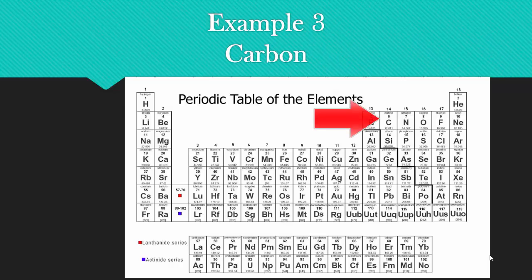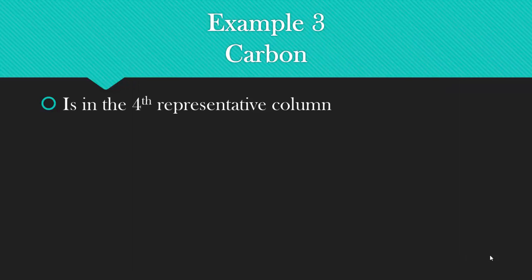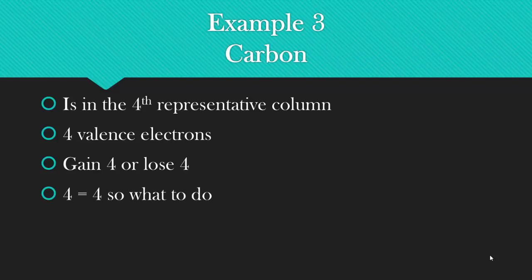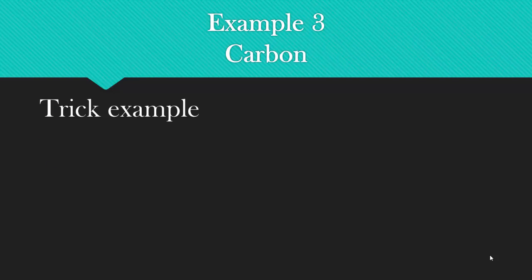Example three, and this is the last one that I'll do, and then I'll have a couple for you to do. Carbon is here, which is in the fourth representative column, has four valence electrons. Gain four or lose four. And obviously four equals four, so what are we going to do? This is a trick example. Carbon usually bonds covalently. It rarely ionizes. So we'll come back to that in a later lecture.